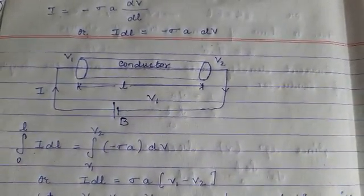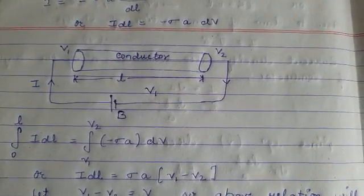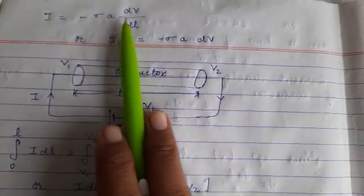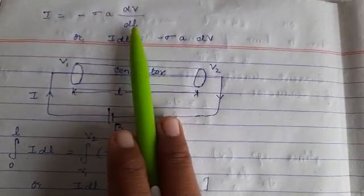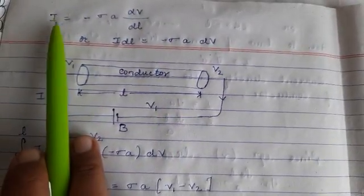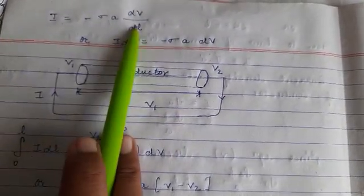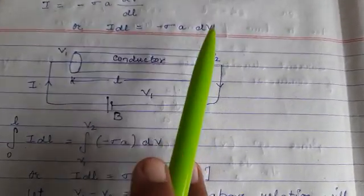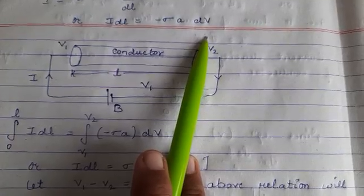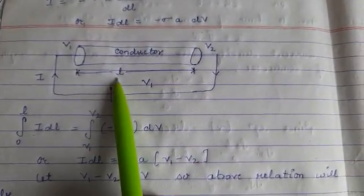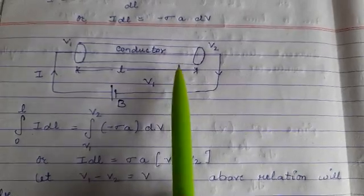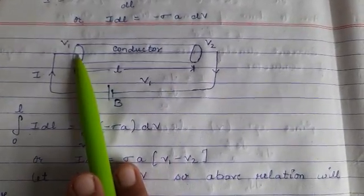As we know that current is equal to negative dQ divided by dt, so according to that, negative sigma A dV divided by dl. When we cross multiply, I·dl equals negative sigma A dV. Now if we consider a conductor of length L with two ends at potential V1 and V2...